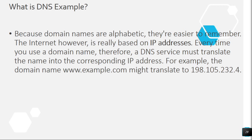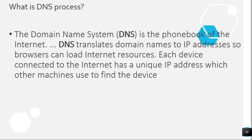Question 28: What is a DNS example? Because domain names are alphabetic, they're easier to remember. The internet, however, is really based on IP addresses. Every time you use a domain name, a DNS service must translate the name into the corresponding IP address. For example, the domain name www.example.com might translate to 198.105.232.4.